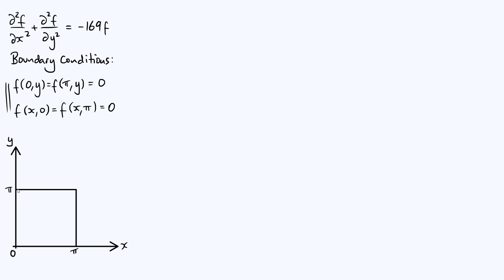If we evaluate the function along the top side of the square we get back zero, so f = 0 along that side. If we evaluate the function on the left side of the square, f is still zero. If we evaluate it on the bottom side it is still zero, and if we evaluate on the right-hand side f is still zero. So that's what our boundary conditions mean — I think that's quite a helpful way of visualizing this.